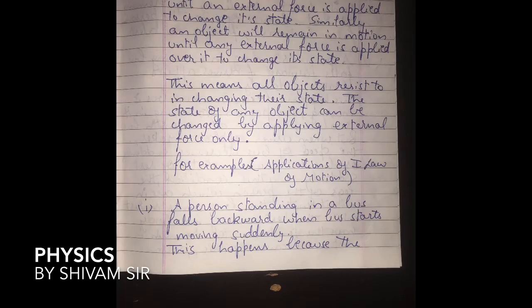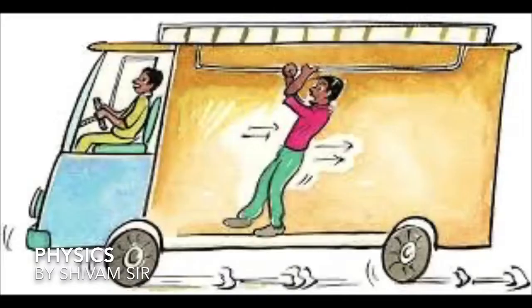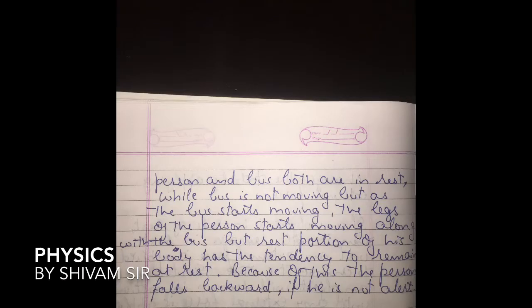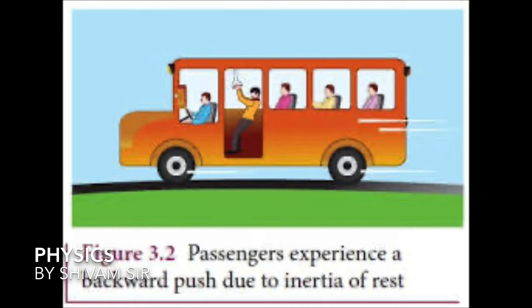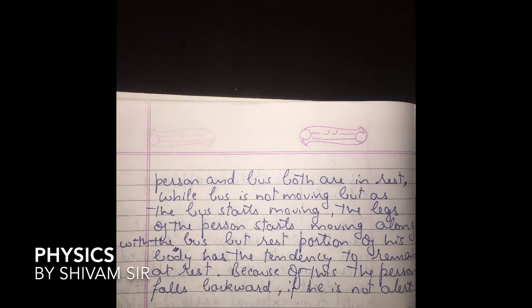Application 1: A person standing in a bus falls backward when the bus starts moving suddenly. This is because the person and the bus are both initially at rest. When the bus starts moving, the legs of the person — which are in contact with the bus — move along with it. However, the rest of the person's body has the tendency to remain at rest, so the person falls backward if not alert.